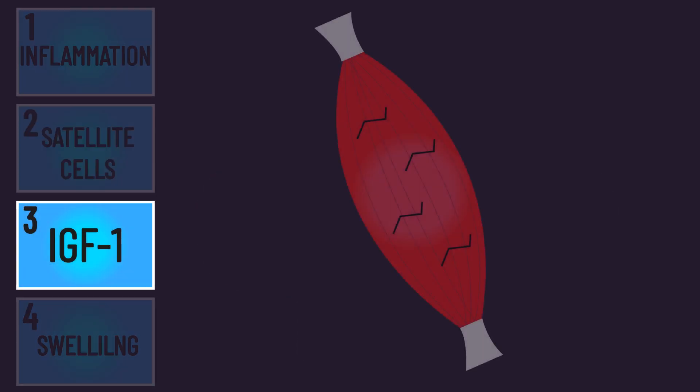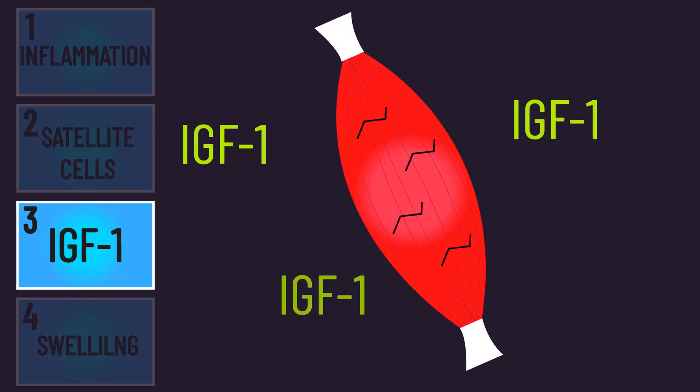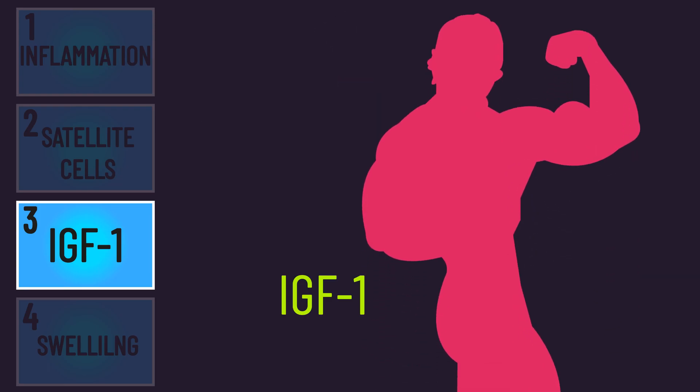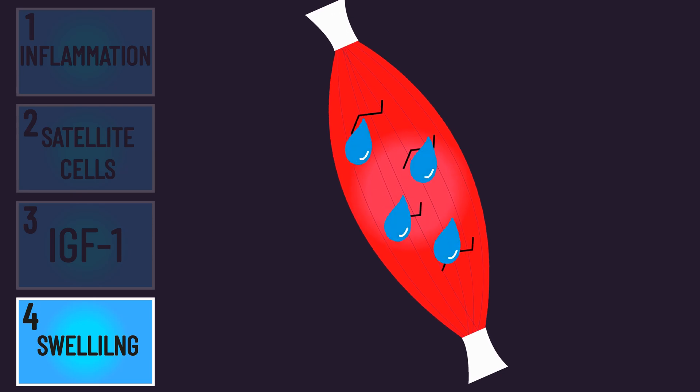The third path is that damage may potentiate IGF-1 production, and IGF-1 is involved in signaling hypertrophy. The fourth and final one is that damage causes muscle fiber swelling.